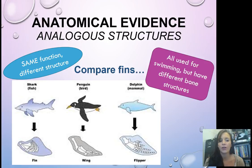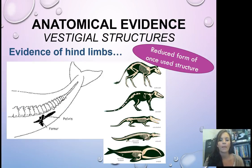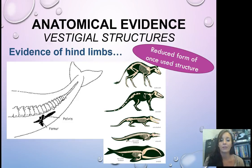Analogous structures mean same function, different structure — the definition is there in blue. If you look at a shark, a penguin, and a dolphin, they all swim using their flippers or fins, but they have different bone structures if you look at the zoomed-in picture below. Another example is a vestigial structure — a reduced form of a once-used structure. The most common vestigial structure is the femur in the pelvis of a whale, showing that once upon a time they had ancestors that lived on land. The other picture shows the leg slowly becoming reduced in the current whale versus the original terrestrial ancestor.